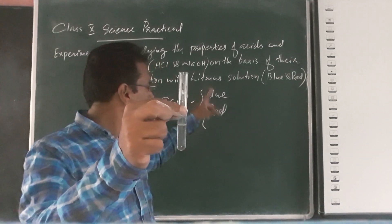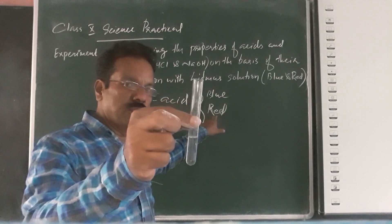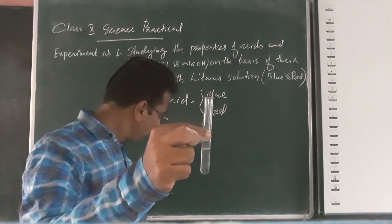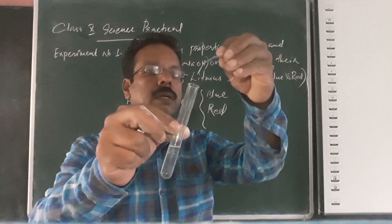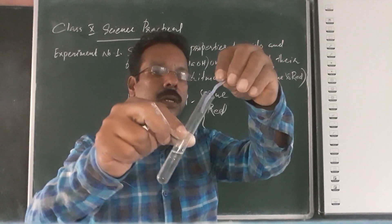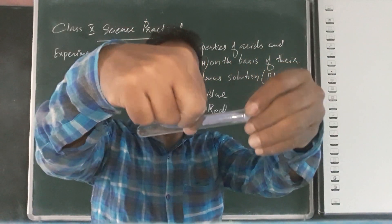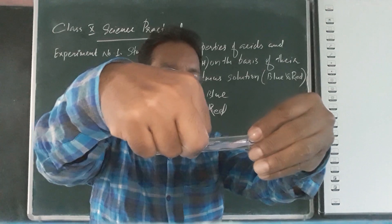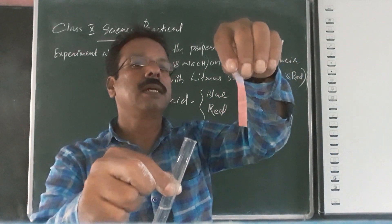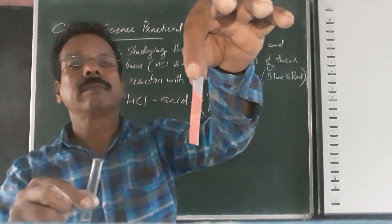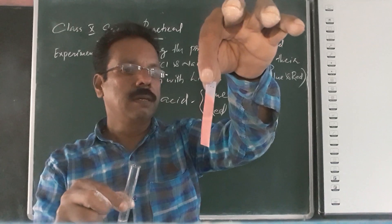Now we are going to test first with the blue litmus paper and the red litmus paper, also blue litmus solution and red litmus solution. First we will check with the blue litmus paper. Can you see any color change? The blue color changes to red.